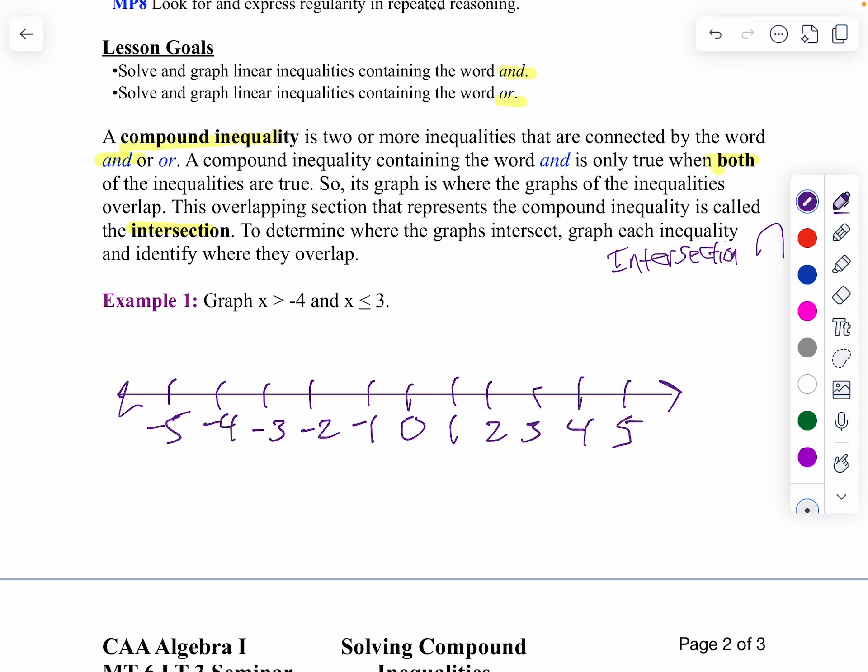Now the first one I'm going to have open circle at negative four going to the right, so it's greater than negative four. And then second one, close circle at three and less than three.